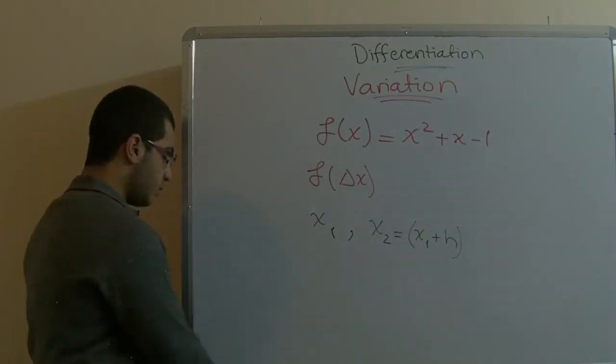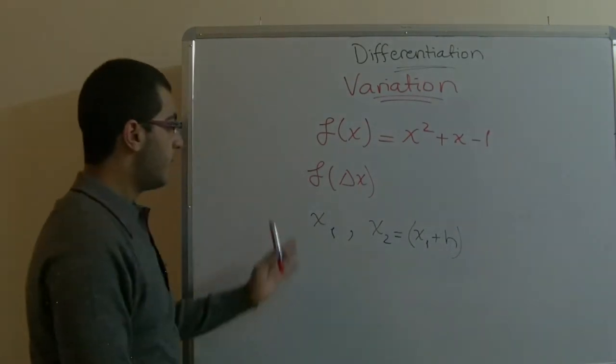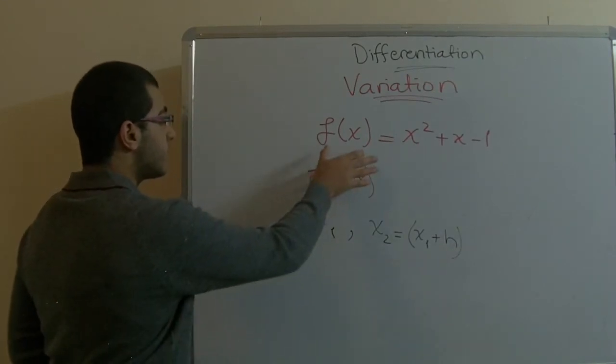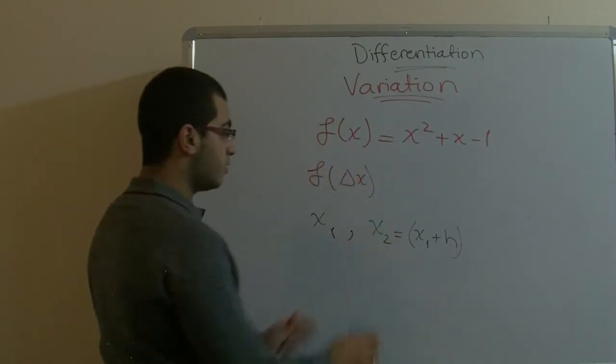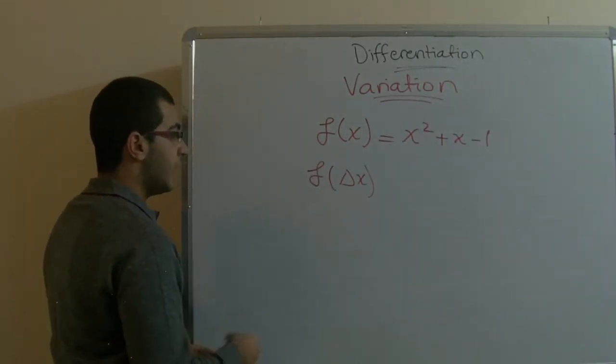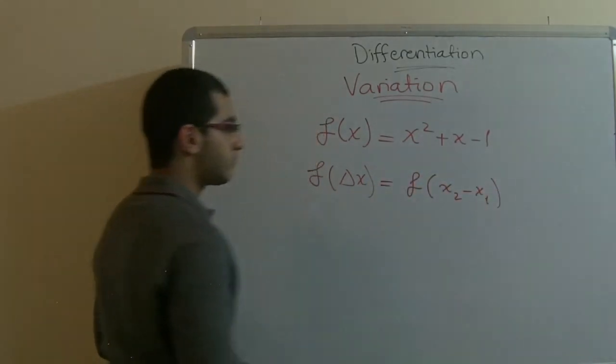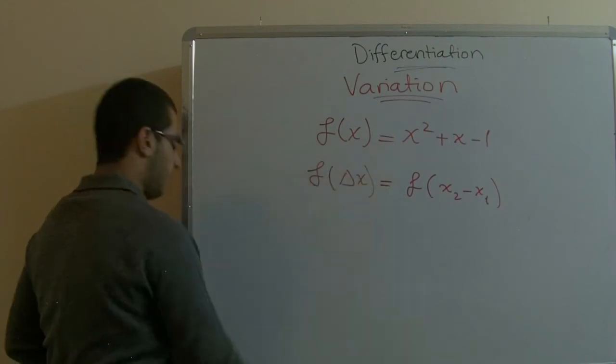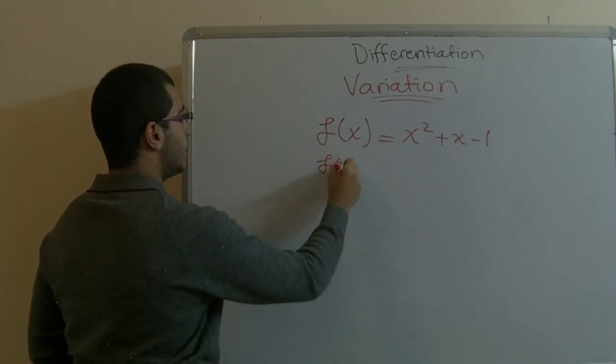As we do normally to get the difference between x2 and x1, we make x2 minus x1. We will subtract the function f(x2) minus the function f(x1) to get the delta x, because the delta x here equals f(x2) minus f(x1). So, for example, if I want to get the value of this, I want to get the f delta x.